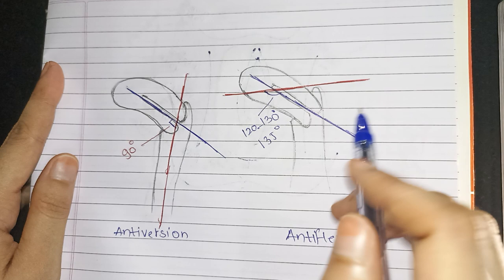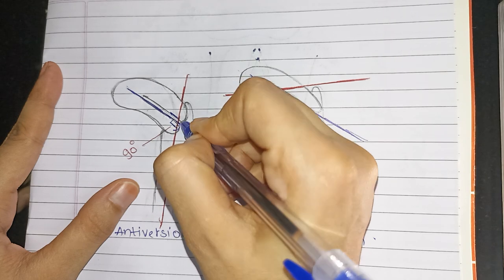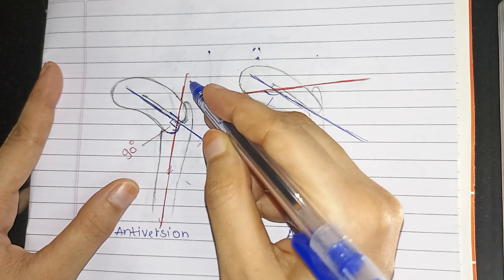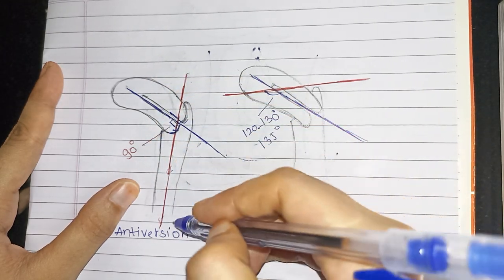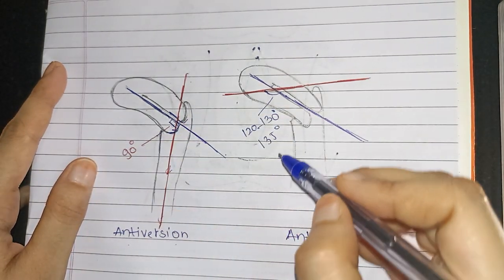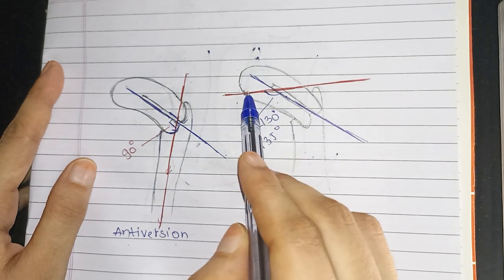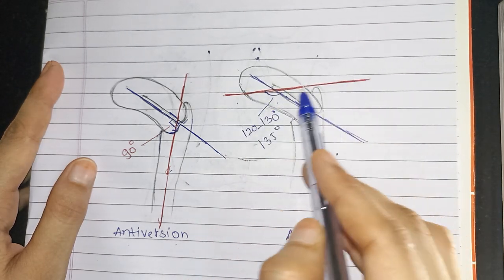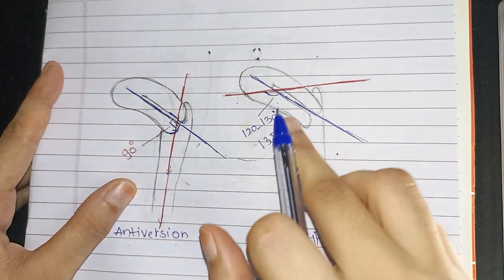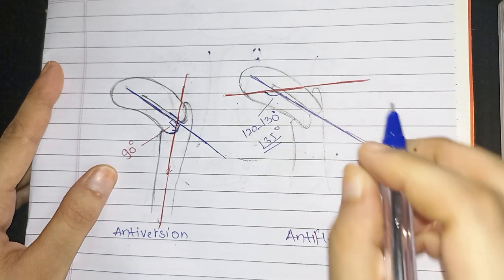Let me show you with the help of a diagram. This is uterus and this is vagina. The long axis passing through the cervix is making an angle of 90 degrees — known as anteversion. Now, the long axis of the cervix is making an obtuse angle with the long axis of the vagina, approximately 121 to 130 degrees, approximately 135 degrees — known as anteversion. Anteversion is the angle between the cervix and the vagina.